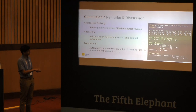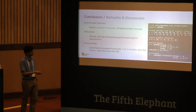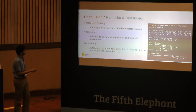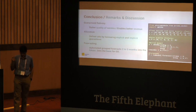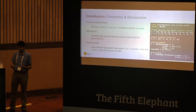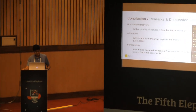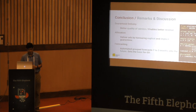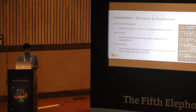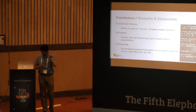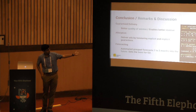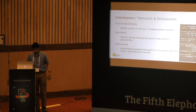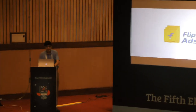This is a simple Python implementation of an ARIMA model with time series, sale events, and future sale events — just for reference. To conclude: we need guaranteed delivery for better quality of service and revenue. For that, two components must work well: allocation, which delivers ads honoring explicit and implicit guarantees; and forecasting, which sets the base for guaranteed delivery. Every other algorithm depends on this forecast, and we need to forecast two to three months into the future.